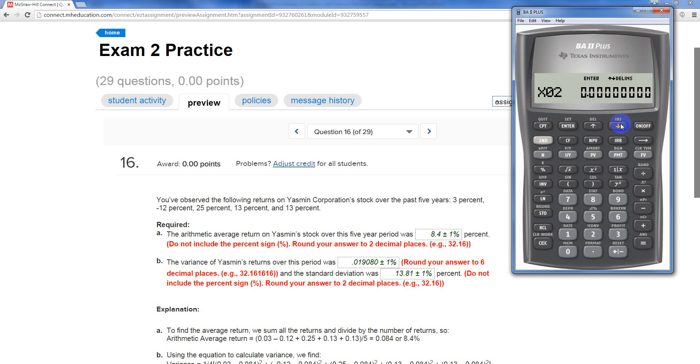Arrow down. X02 is 12%, but it's negative. So we say point, one, two, plus, minus, enter. Arrow down. Leave Y02 alone because we are only looking at one stock.